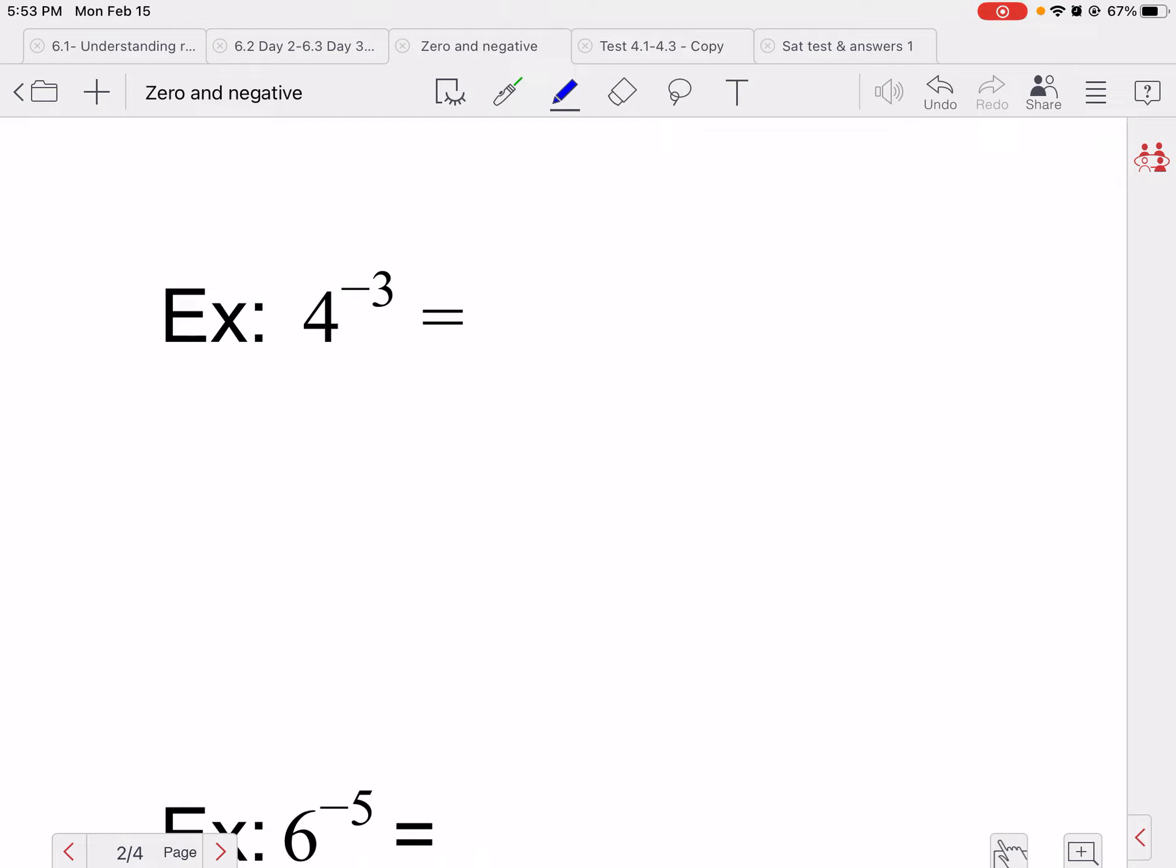Now, negative exponents. In the math world, they have decided they do not like your answer to be a negative exponent. They just don't like negative exponents. So we want to make them positive. What you do is you always put a number over one if there's no denominator.